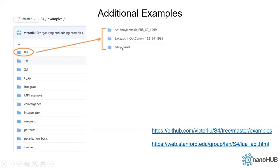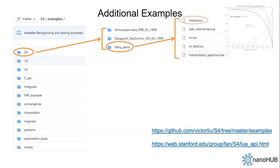If you go to the 0D folder and then the Fabry-Perot subfolder, you will see a few basic examples that can reproduce some textbook results. Especially if you go to fresnel.lua, you can reproduce the whole transmittance and reflectance spectrum at all incident angles.